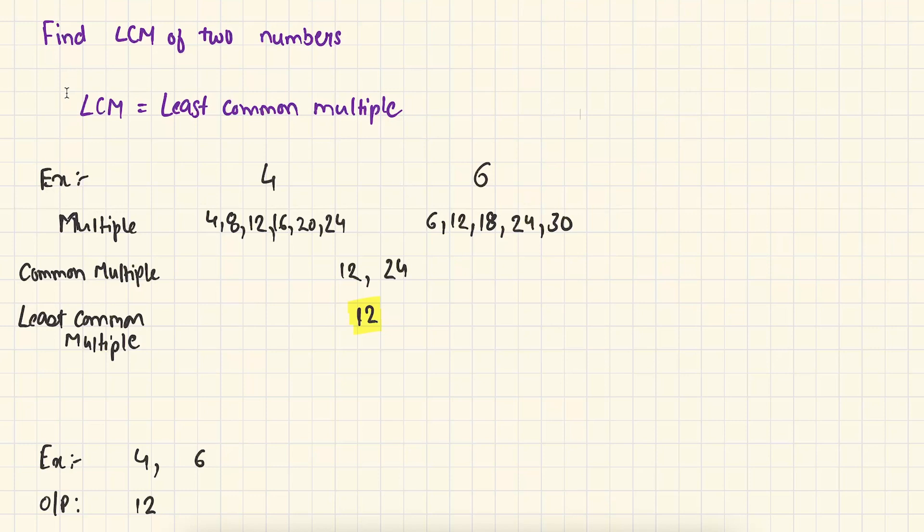LCM stands for least common multiple. Let's understand this term with an example. Let's say you have two numbers four and six. The multiples of four are 4, 8, 12, 16, 20, 24 and so on. And the multiples of six are 6, 12, 18, 24, 30 and so on.